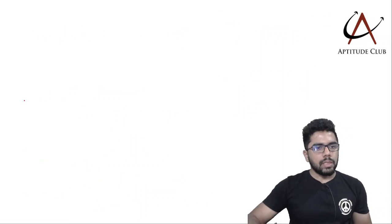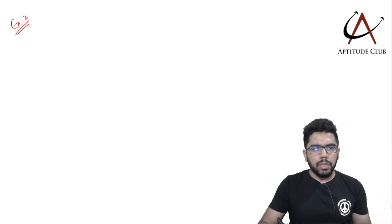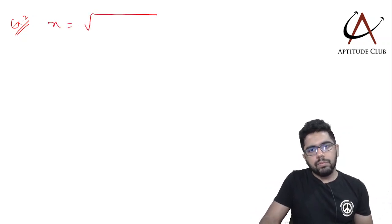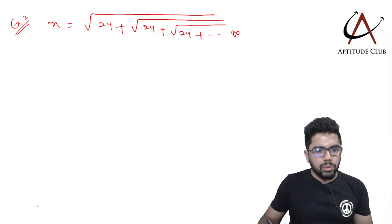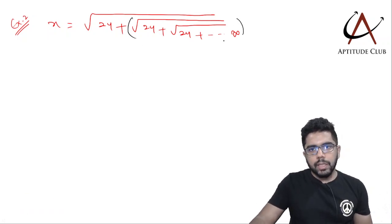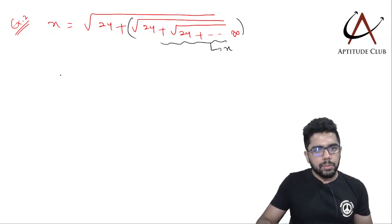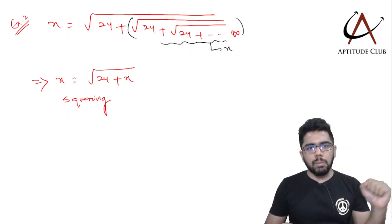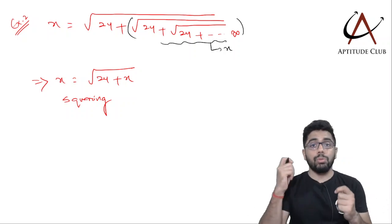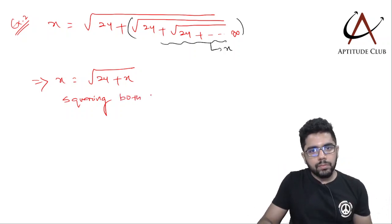Let me take another example. Suppose x equals square root of 24 plus square root of 24 plus square root of 24 and so on till infinity. Keep one unit of 24 and take the rest as x again. So x = √(24 + x). There's a reason I'm taking multiple examples — only after two or three examples will you be able to relate to the shortcut. Squaring both sides: x² = 24 + x.